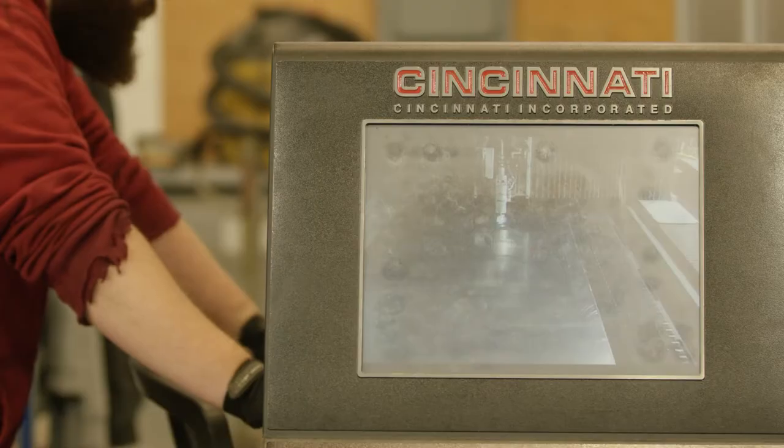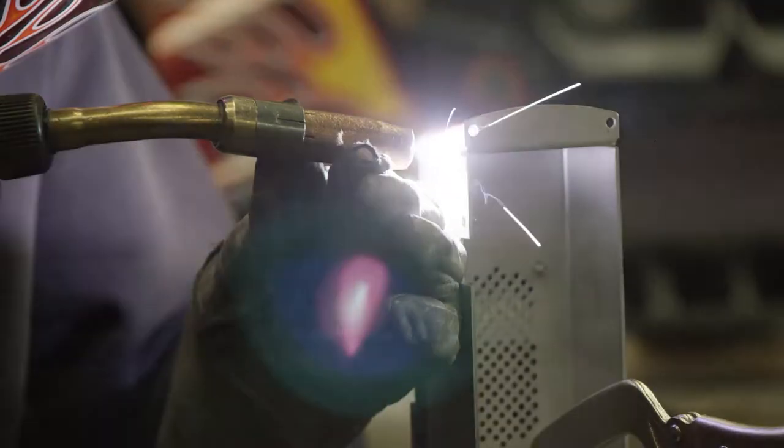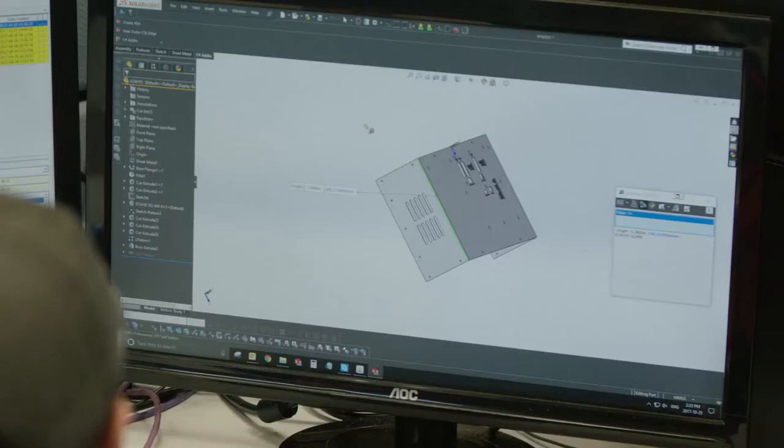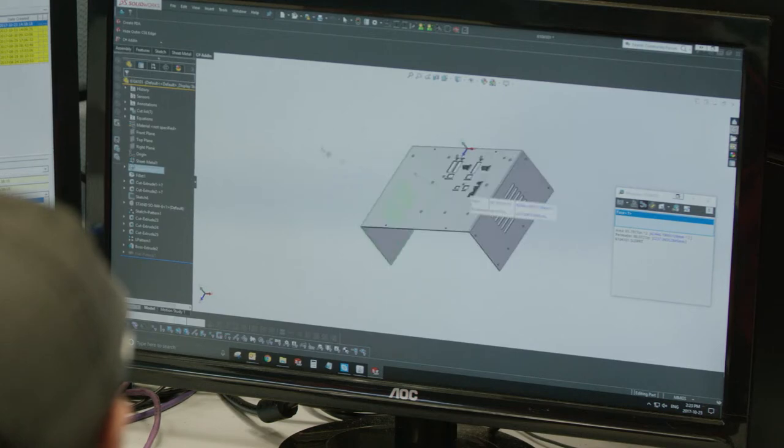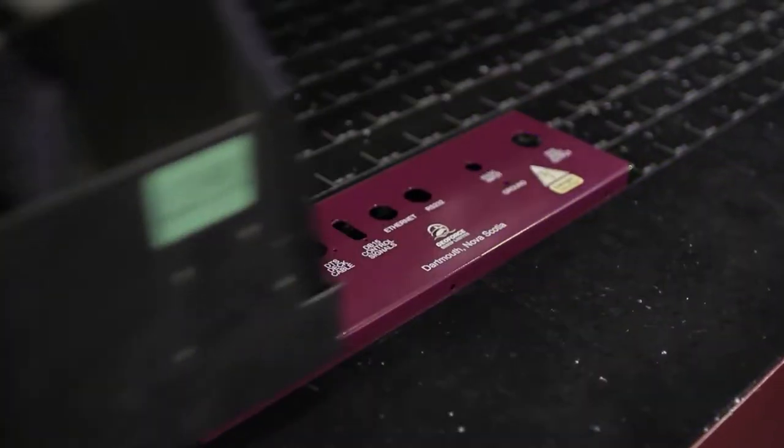Protocase manufactures custom sheet metal, CNC machined, and 3D printed enclosures, parts and panels in two to three days. Because we want you to be able to have your designs built as you envision them, we offer a number of different finishes to suit your application and requirements.